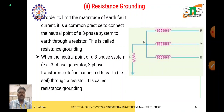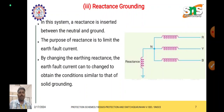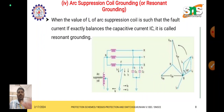In reactance grounding, in a three-phase system, a reactance is connected between the neutral and ground. The purpose of this reactance is to limit the earth fault current. Based on the adjustability of the reactance, we can limit the earth fault current to obtain conditions similar to solid grounding.